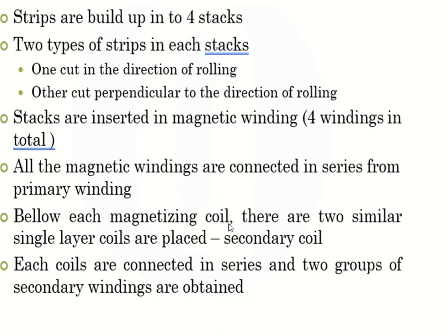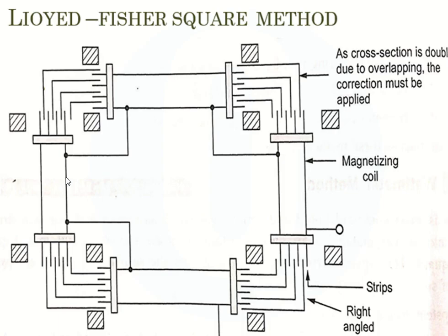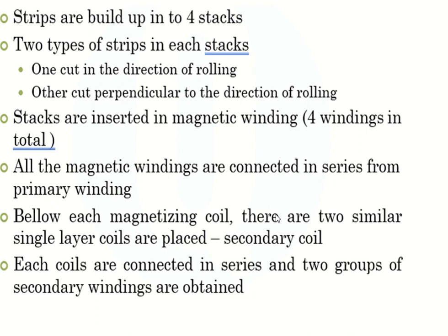Below each magnetizing coil, there are two similar single-layer coils called secondary coils. Below this magnetizing winding, two layers of coils are connected in series to form the secondary winding. There will be one primary winding and two secondary windings. Each coil is connected in series and two groups of secondary windings are obtained.